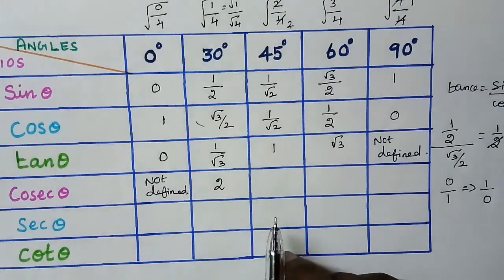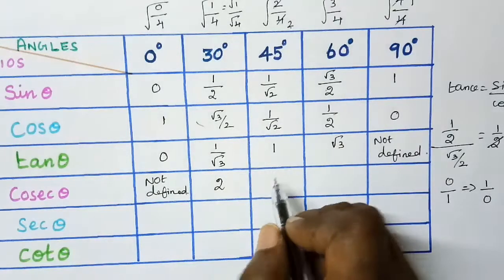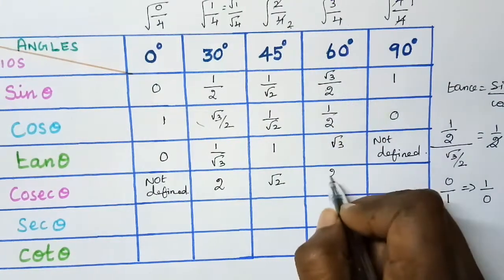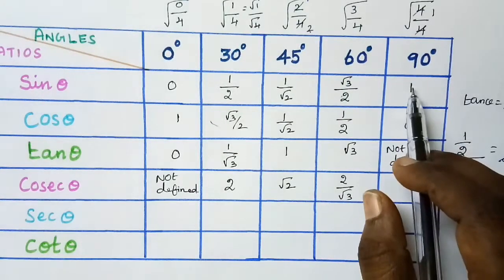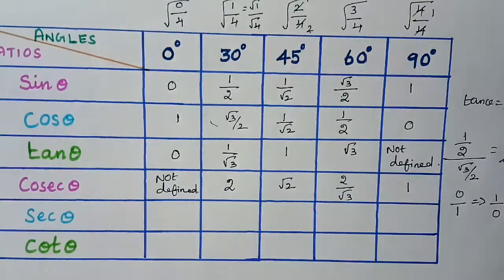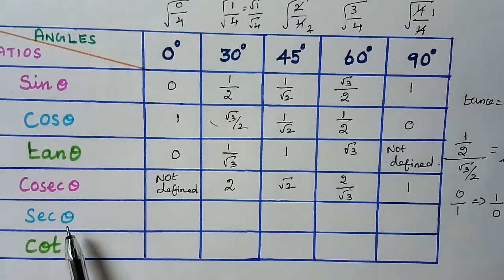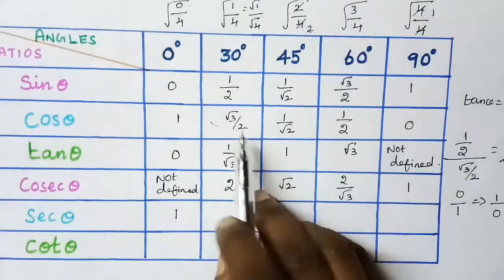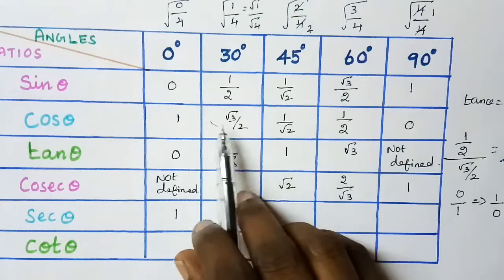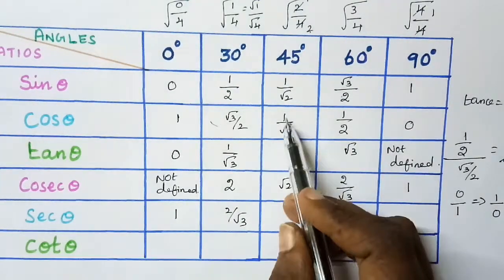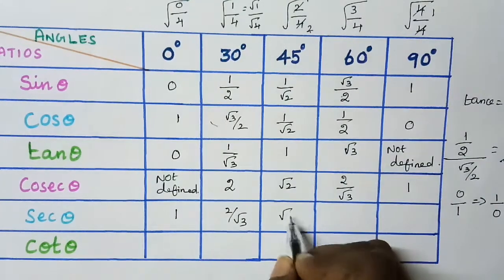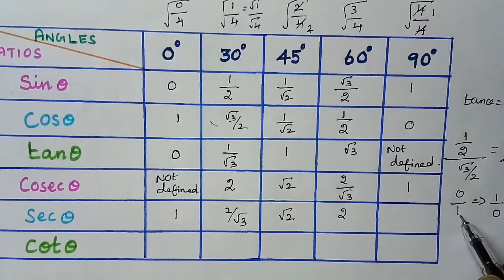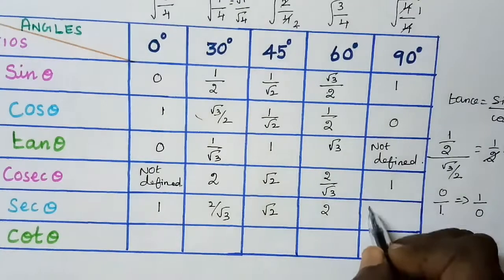In the same way we get all the remaining cosecant values: root 2 by 1 which is root 2, then 2 by root 3, and the last one for 90 degree is reciprocal of 1, which is 1. Next, secant theta is the reciprocal of cos theta. Cos 0 degree is 1, reciprocal is 1. Cos 30 degree is root 3 by 2, reciprocal is 2 by root 3. Then 1 by root 2 gives root 2, then 1 by 2 gives 2, and cos 90 degree is 0 so reciprocal is not defined.